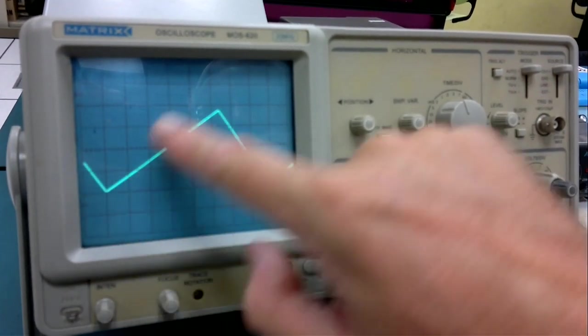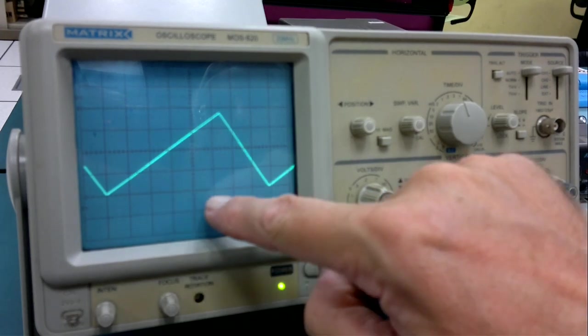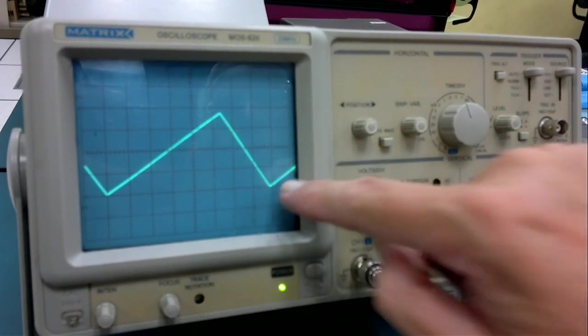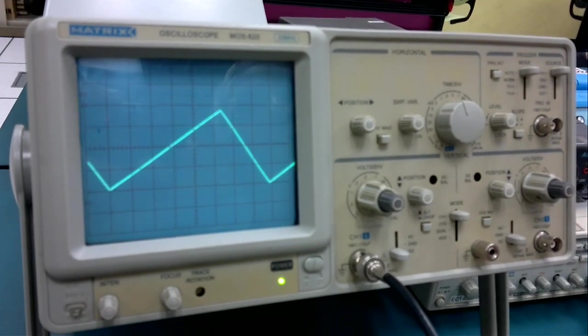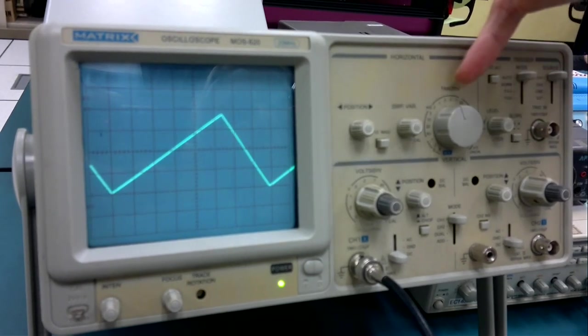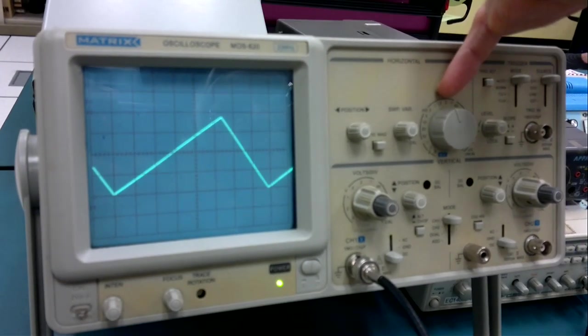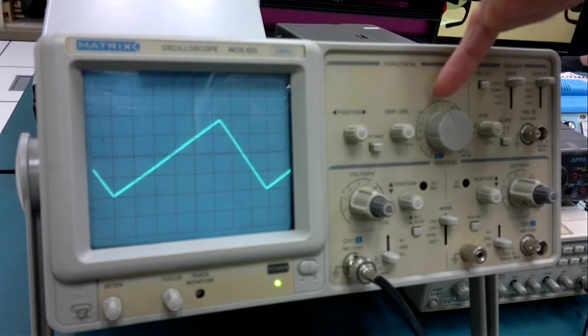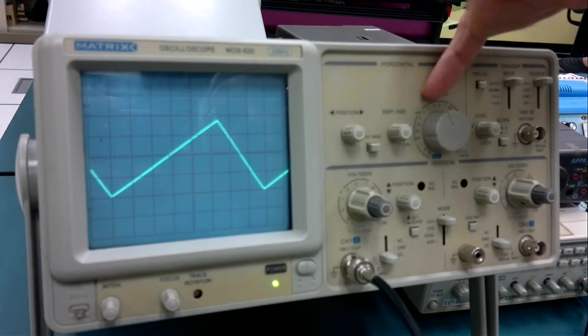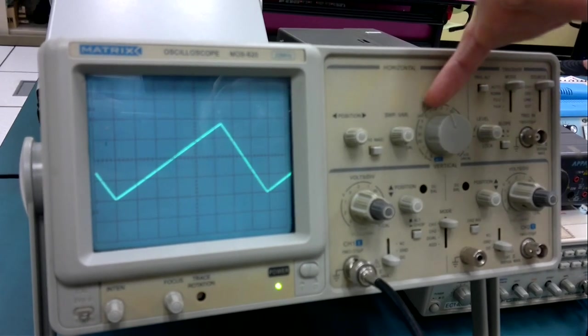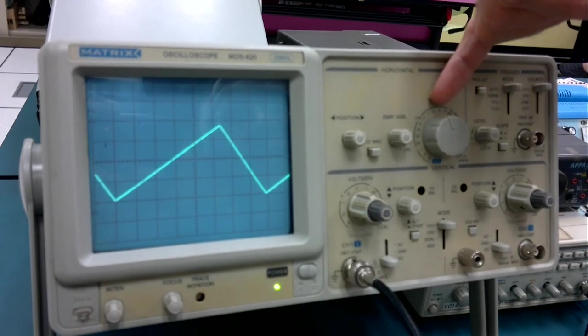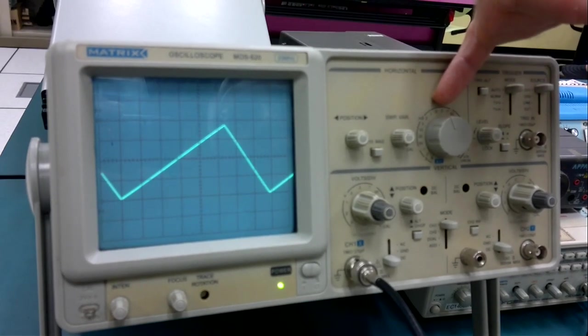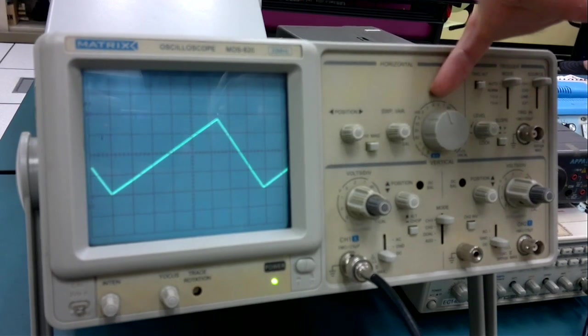How many divisions long is this cycle? 1, 2, 3, 4, 5, 6, 7.8. 7.8 what? Well, we have 0.5 milliseconds per division. If it's 1 millisecond per division, it will be 7.8 milliseconds. This is half of that. So, it's going to be 3.8 milliseconds. That's how long it is.